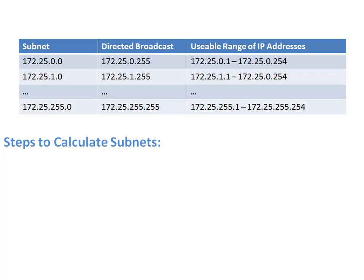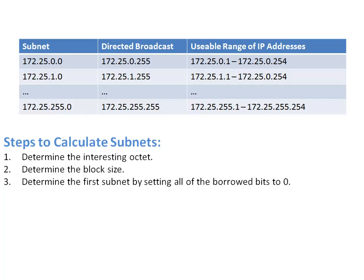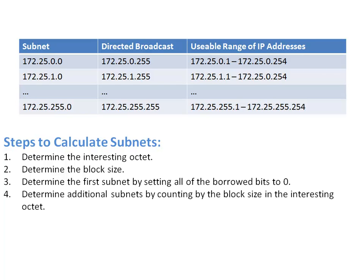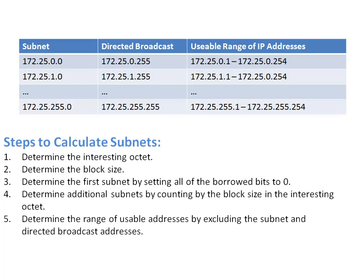To sum up the steps: step 1, determine the interesting octet — the octet containing the last 1 in the subnet mask. Step 2, determine the block size using the formula 256 minus the subnet mask value in that interesting octet. Step 3, determine the first subnet by setting all borrowed bits to zero and start counting in the interesting octet, incrementing by the block size. Once you've calculated all subnets, step 4 is to eliminate the first IP address — the network address — and the last IP address — the directed broadcast. Everything in between is your usable range of IP addresses.